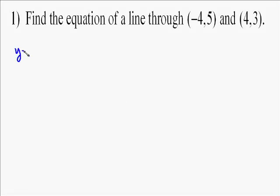The following problem asks us to find the equation of a line through two points. To do this, we use y equals mx plus b, where we need to find out what the slope is and the y-intercept. The good thing is, slope is very easy to find because we have an equation for it.